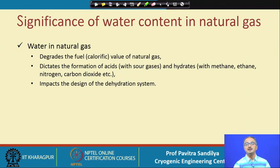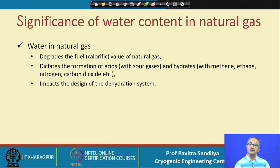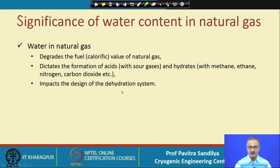Hydrates are solid particles and they may get deposited inside the pipelines, equipment, and heat exchangers. They will either generate pressure drop by impeding the flow of gas, or they can make scales on the heat exchange surfaces so that heat transfer efficiency gets reduced, thereby affecting the dehydration system. That is why we have to understand the water content in natural gas.